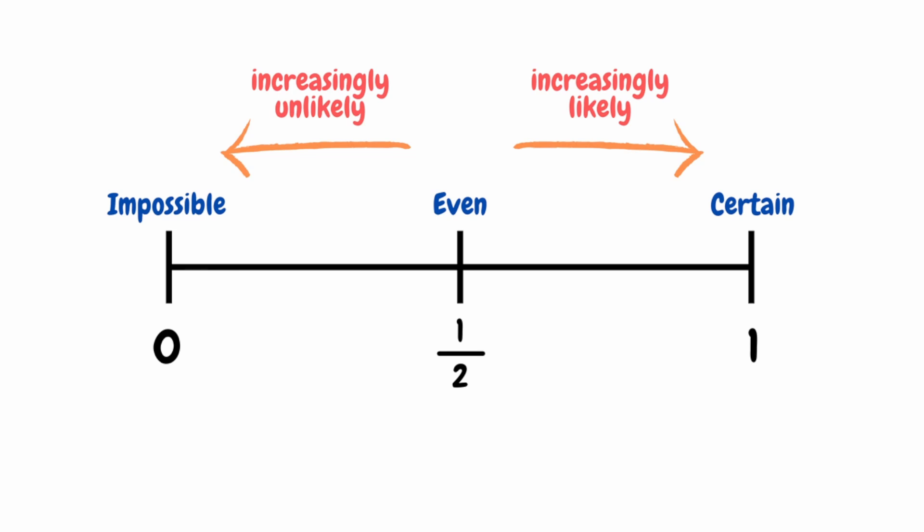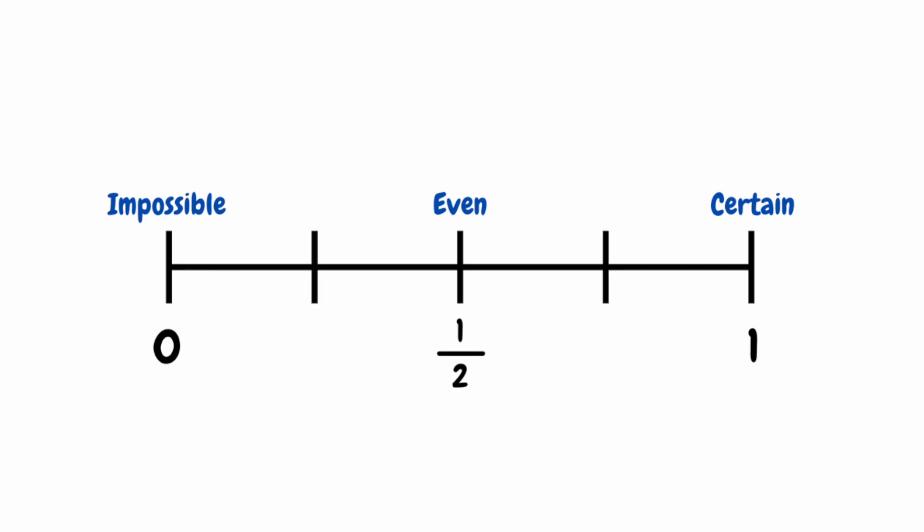We can also split our scale further into quarters. We've got our 1 half in the middle, which is equivalent to 2 quarters. Either side of that we have 1 quarter and 3 quarters. We generally use these values to interpret likeliness of an event happening, by expressing 1 quarter as unlikely and 3 quarters as likely.